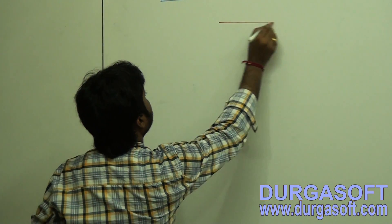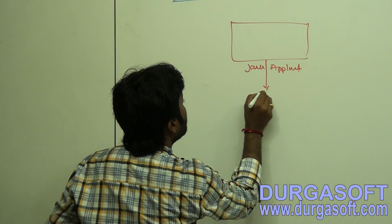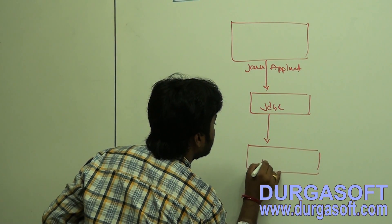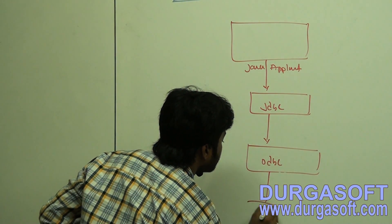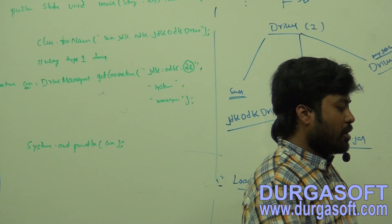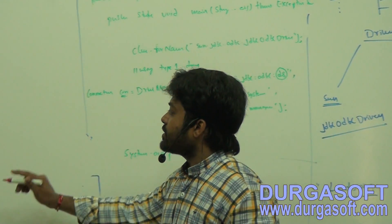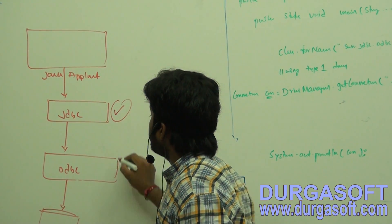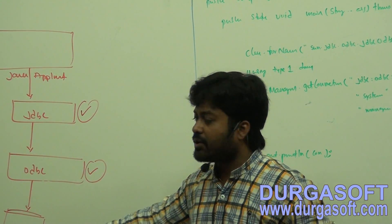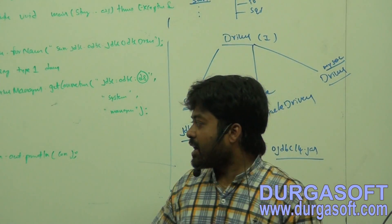In Type 1 driver, we have three layers. The Java application talks with JDBC, JDBC talks with ODBC, and finally ODBC talks with the database. The ODBC here is a Windows ODBC application. Your Java application, using the JDBC API, needs to talk with ODBC, and ODBC will talk with your database using open database connectivity calls.